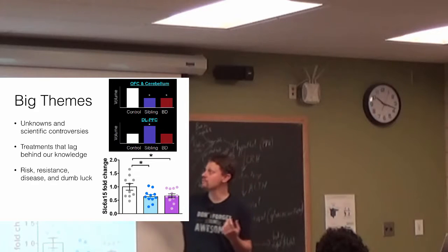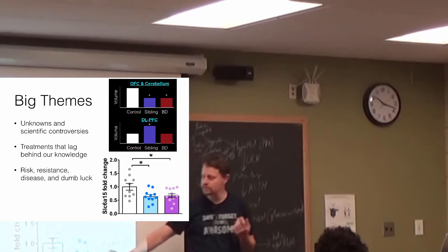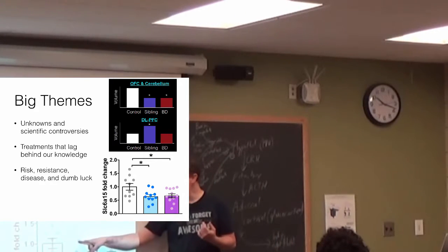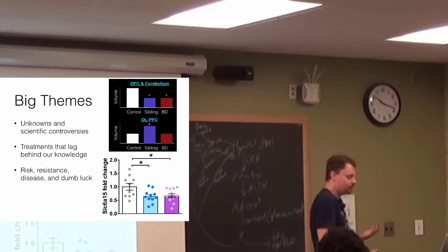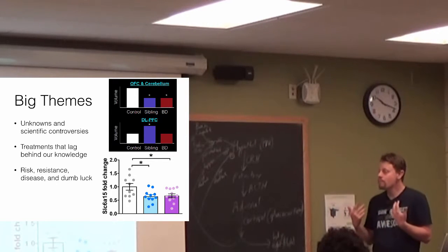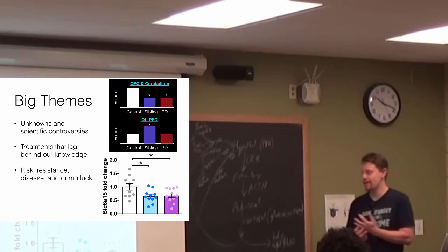But sometimes these bar graphs obscure the reality, which is there's a huge spread, and why this person got major depressive disorder and this person didn't might just be an environmental factor, but maybe they were both exposed to trauma. A lot of times we just can't figure it out, and it probably comes down to dumb luck.